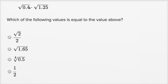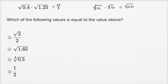We could use an exponent property here, or a radical property, that if I have the square root of a times the square root of b, that's going to be equal to the square root of a times b. So in this case, a would be 0.4 and b would be 1.25, so this is going to be the same thing as the square root of 0.4 times 1.25.